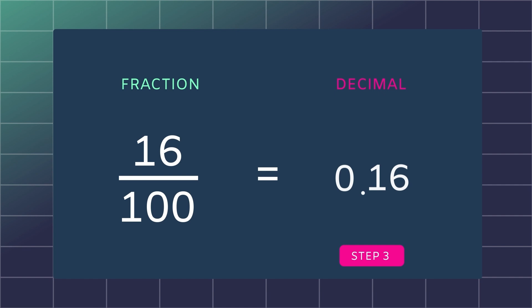You now know that a decimal can be written as a fraction and a fraction as a decimal using place value.